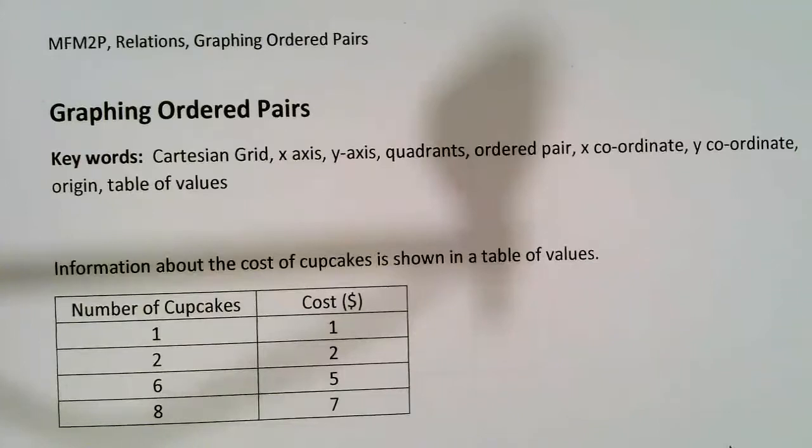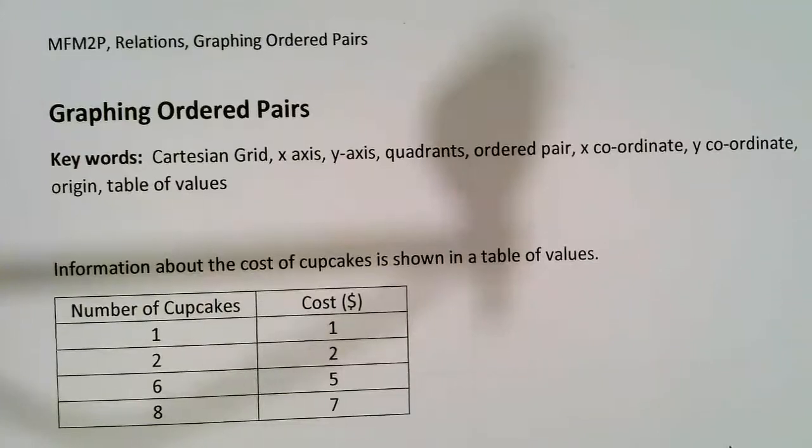So we're going to be dealing with relationships. In this table of values we have some information about the number of cupcakes and the cost for purchasing the cupcakes. Right now the information is presented in a table of values.